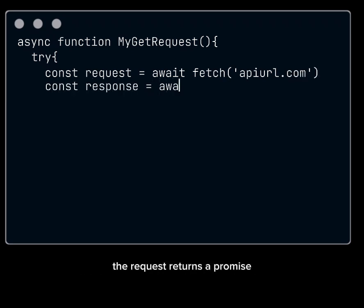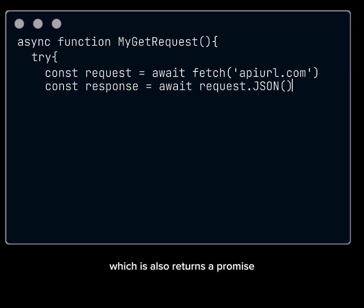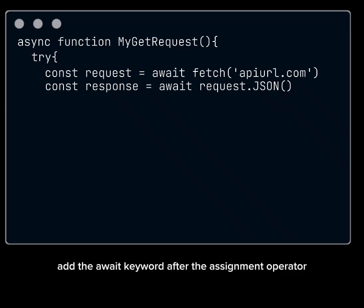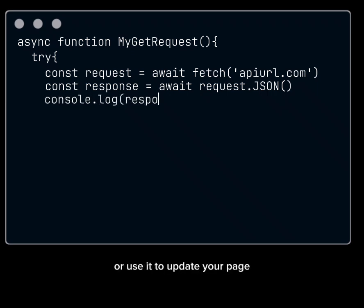The request returns a promise which has a json function, which also returns a promise when invoked. Invoke this json function and assign it to a variable to store the data retrieved from the API — don't forget to add the await keyword after the assignment operator. Then log out the data or use it to update your page.